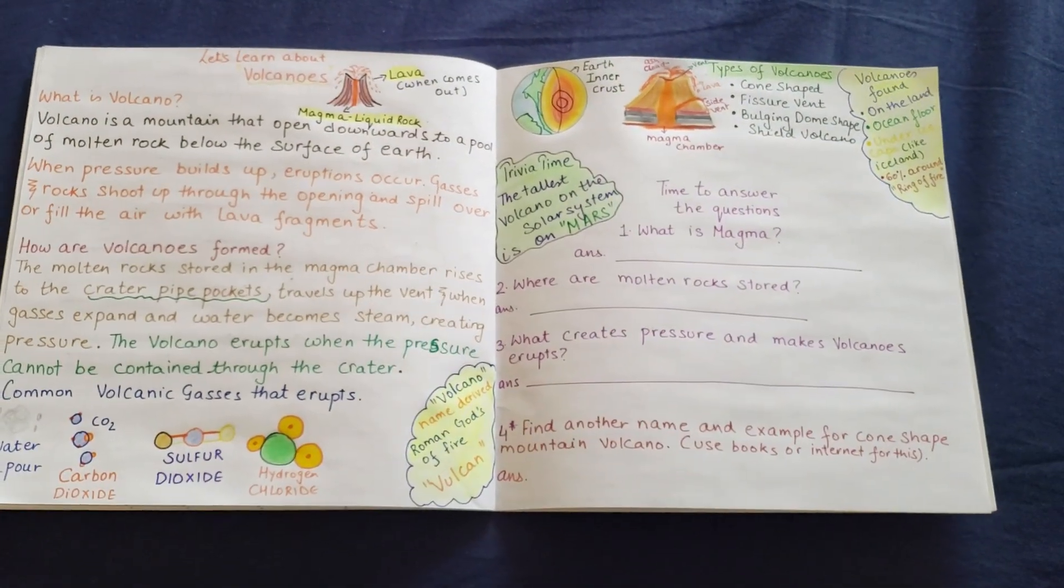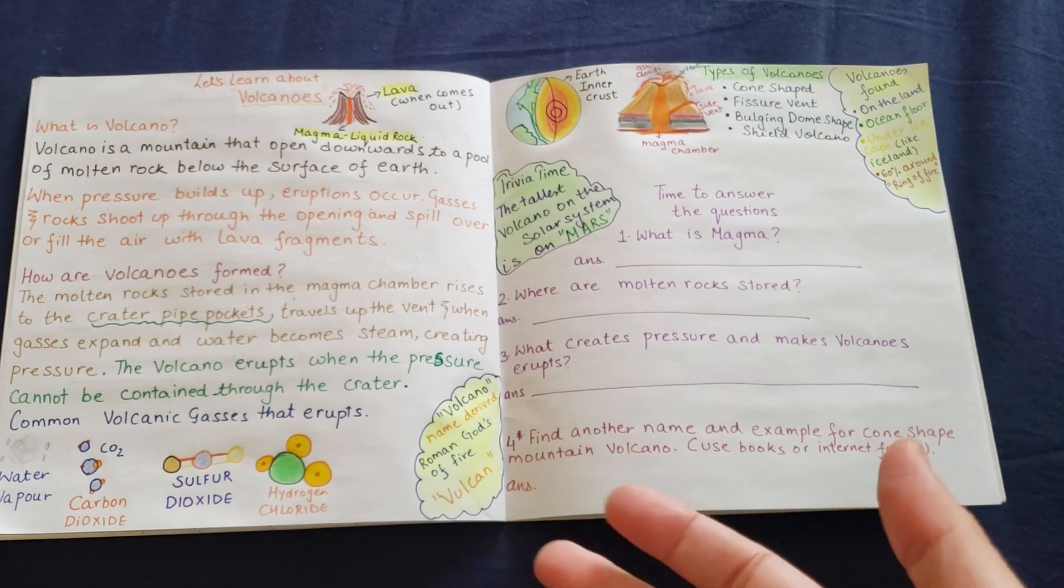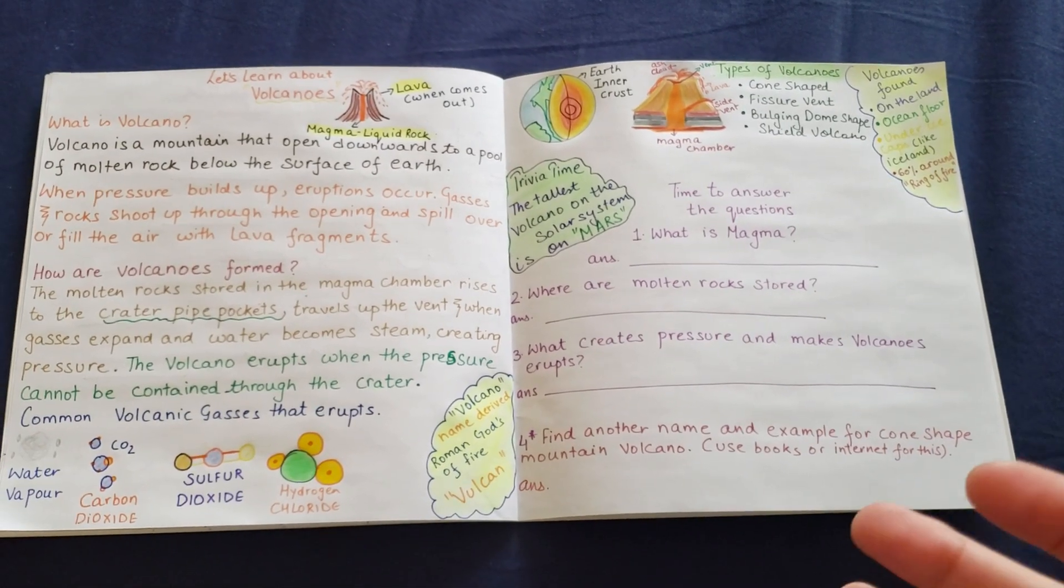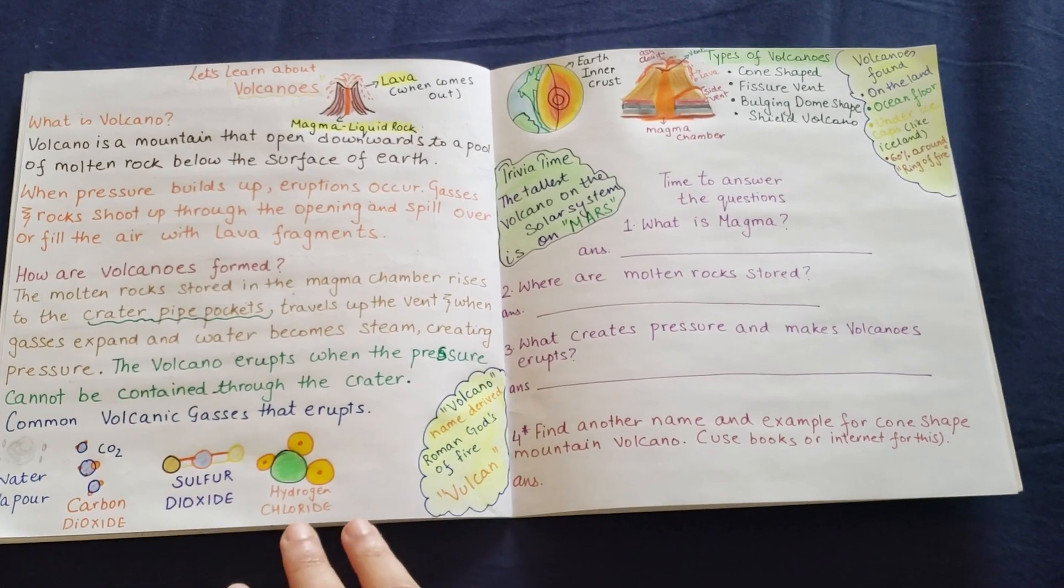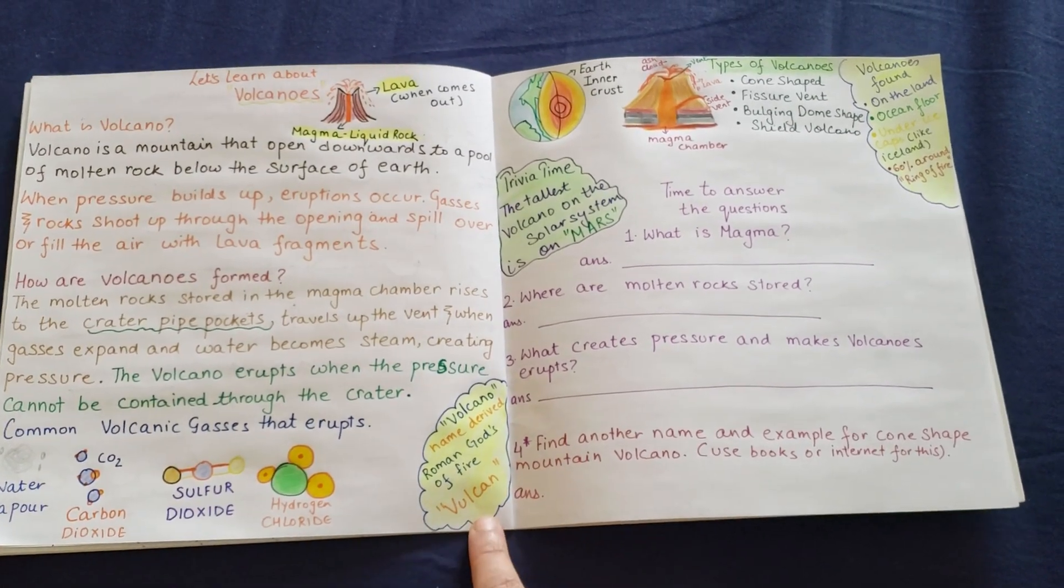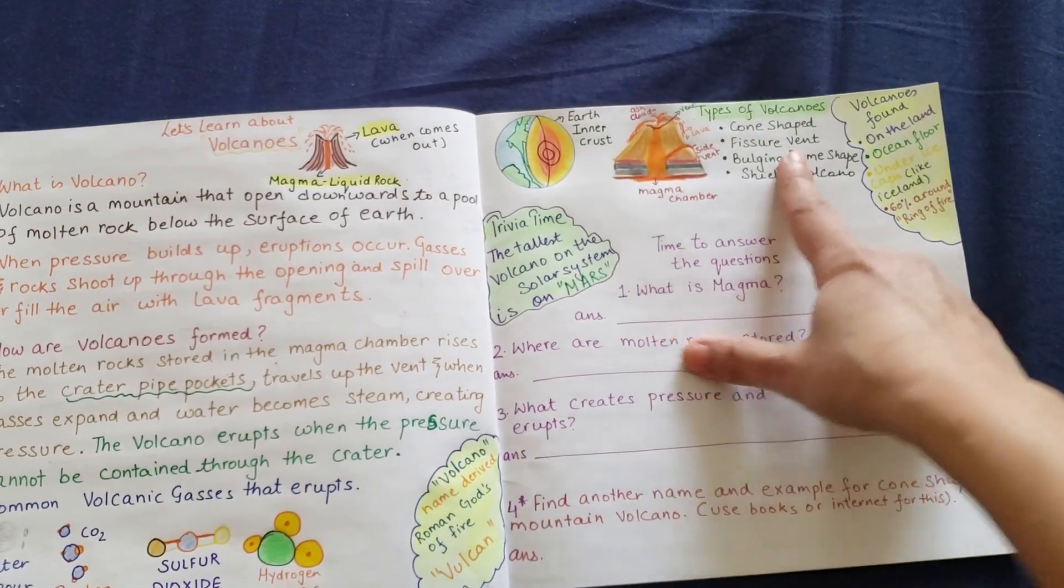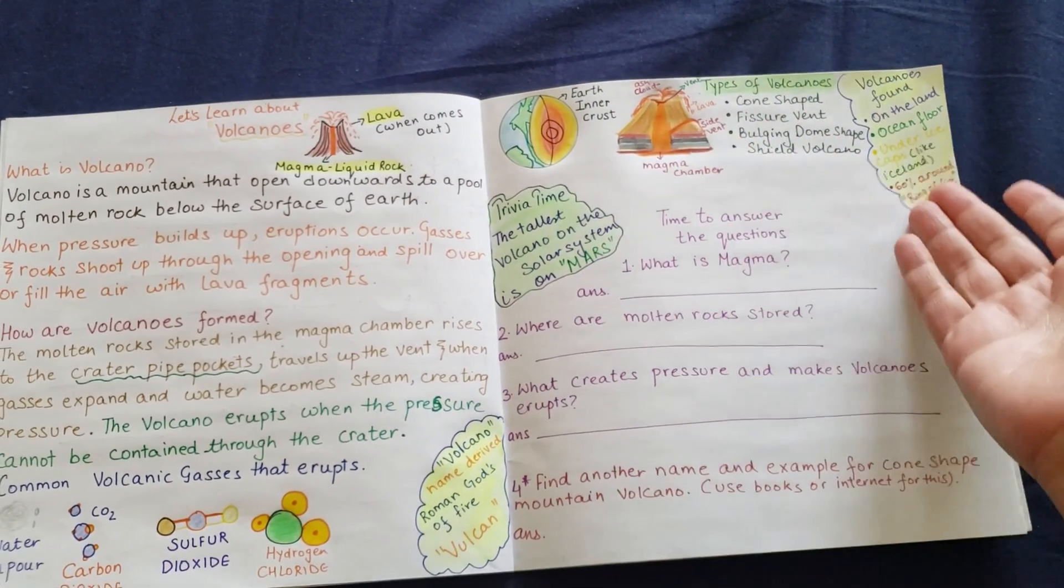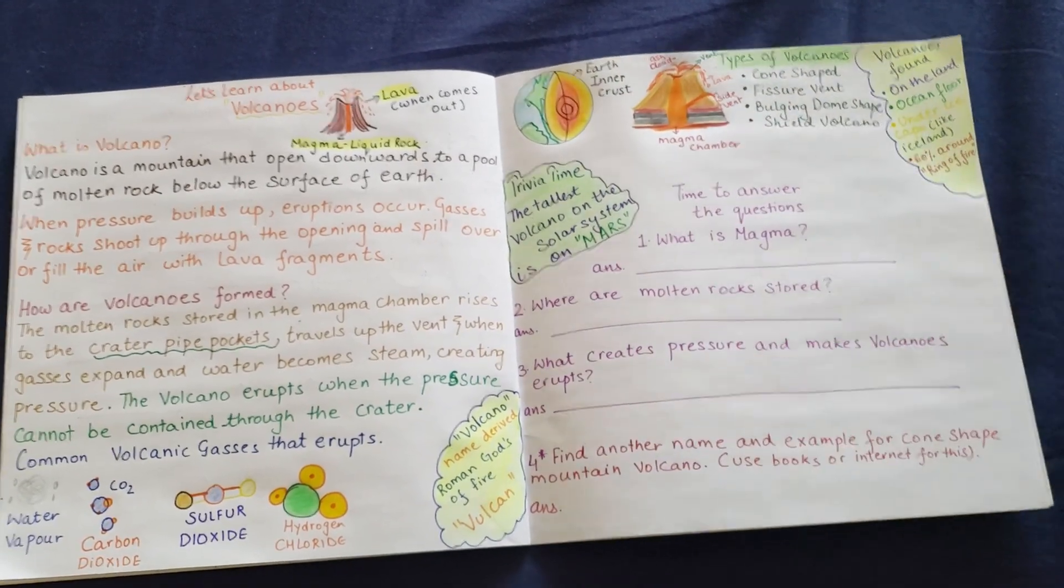Now you have the science section, which is about volcanoes. So here I have tried putting on one page some very important information about volcano. I have mentioned the gases that come out, how the volcano, the name has been derived. I've shown the inner crust, types of volcanoes, where are volcanoes found, the tallest volcano.